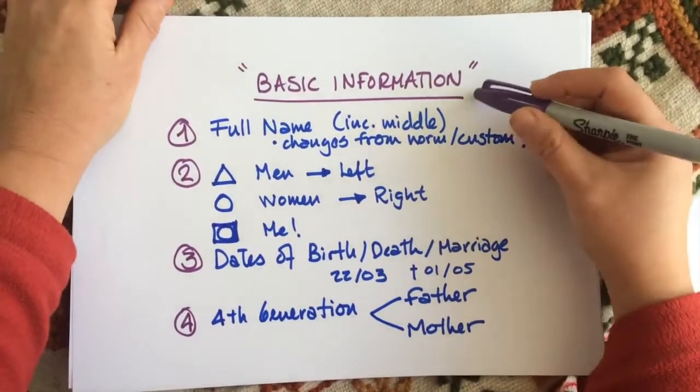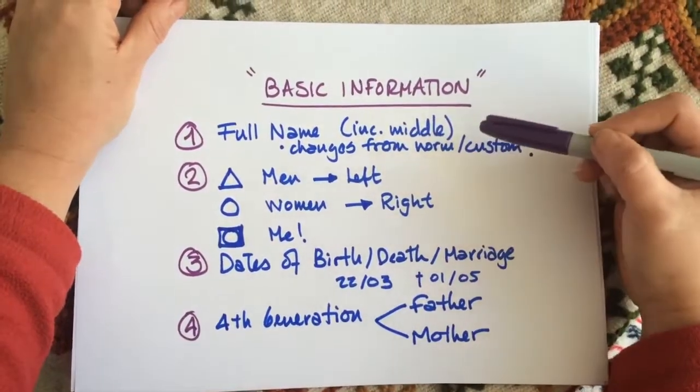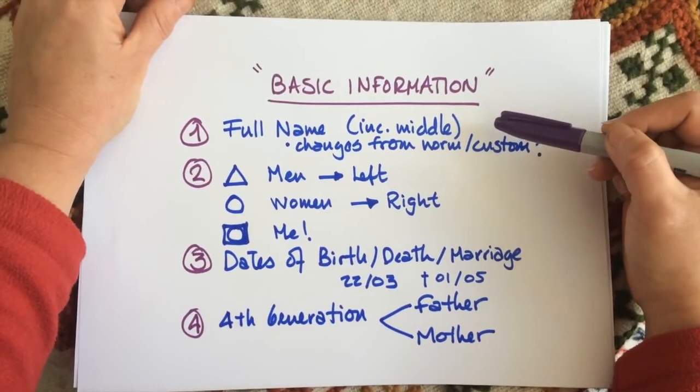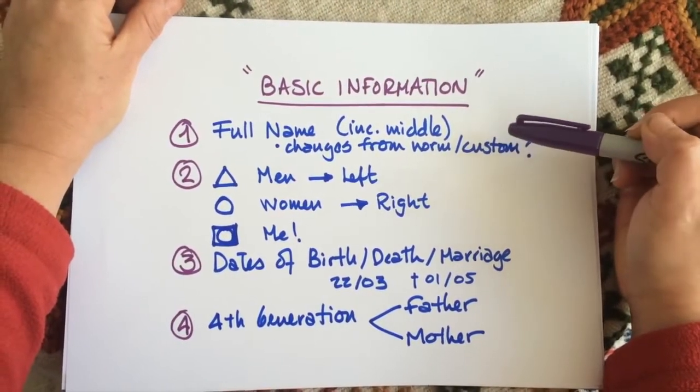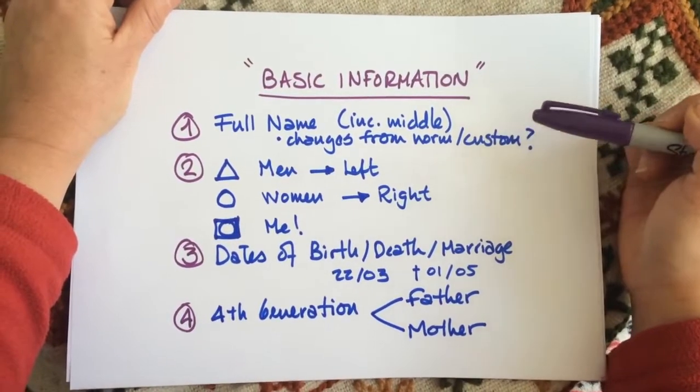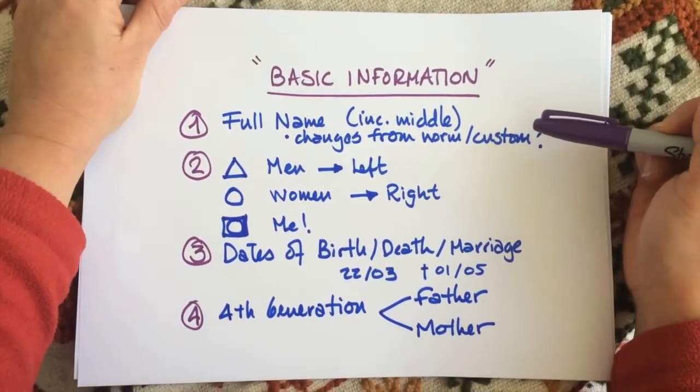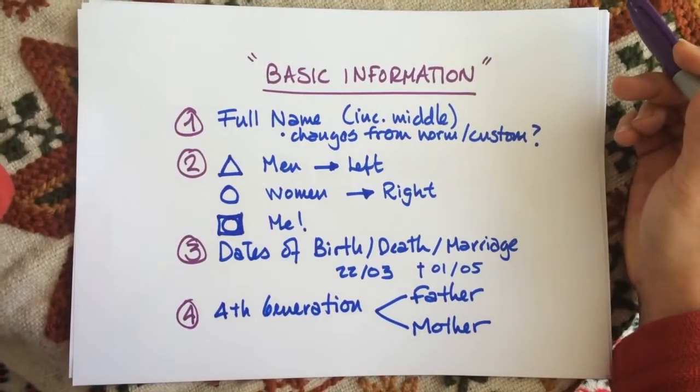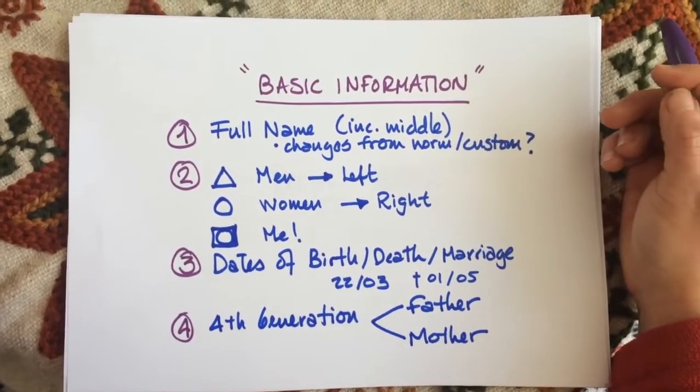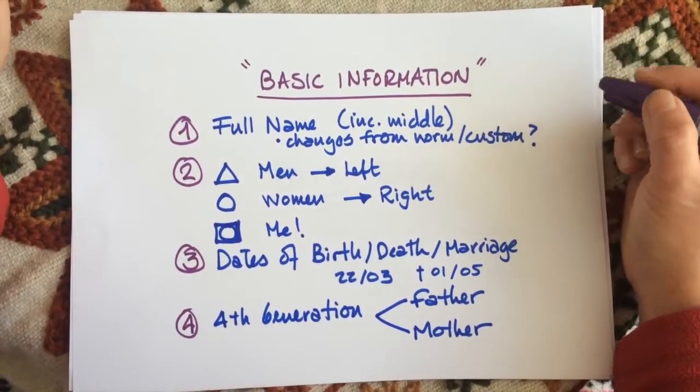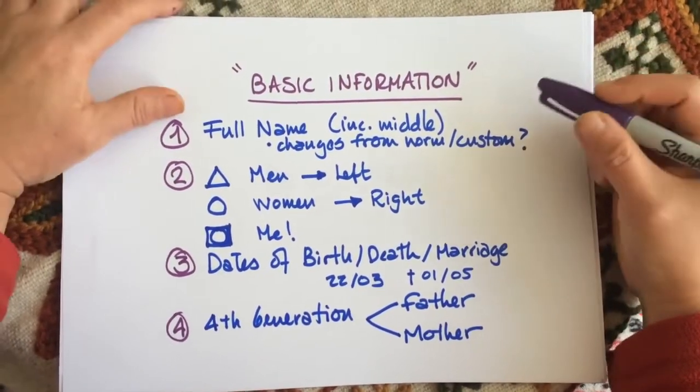First we need basic information. We need full name of the people, the members in the tree including your middle name. Also worth noting when somebody has changed their name or has deviated from the custom. I am a very good example of this because I did not take my husband's name for instance so I kept my maiden name. You could make a note of that if there's such a case in your family tree.